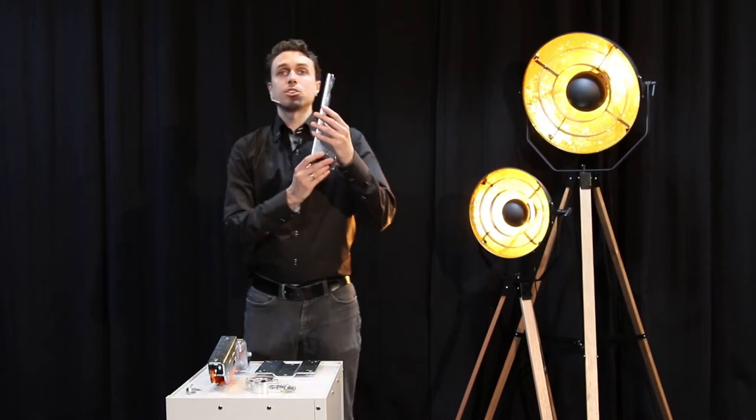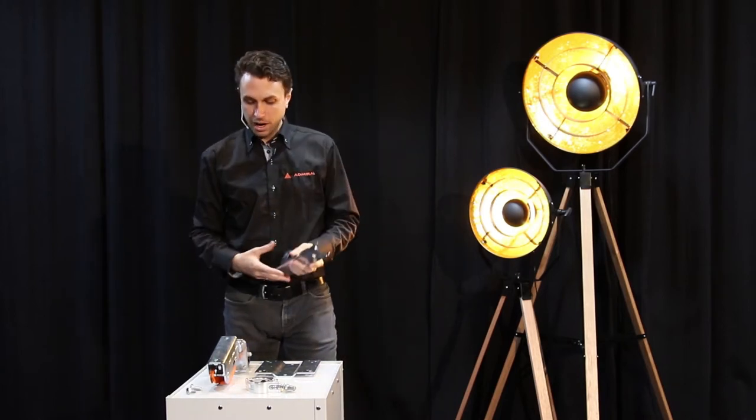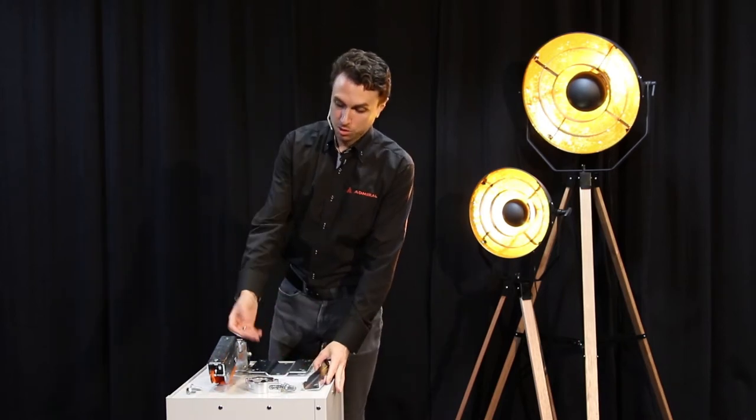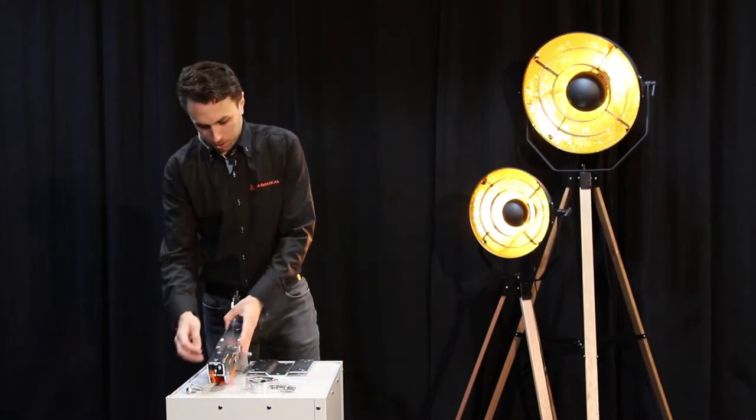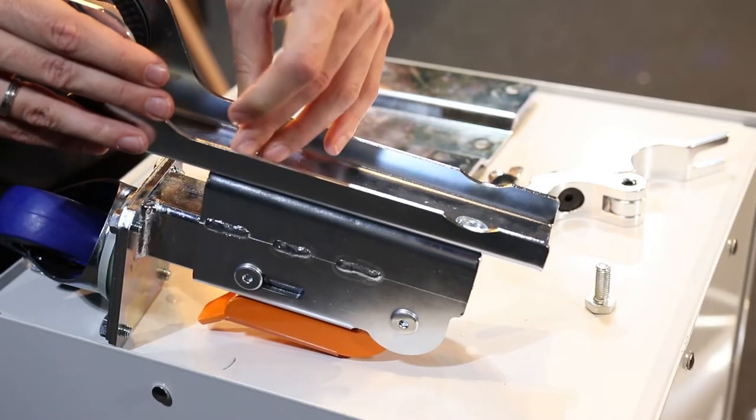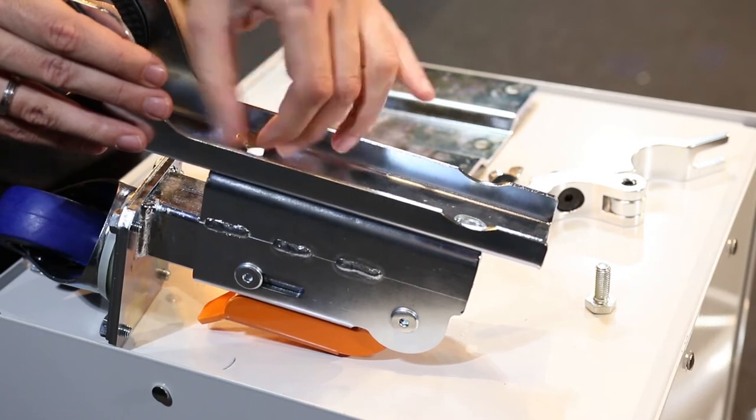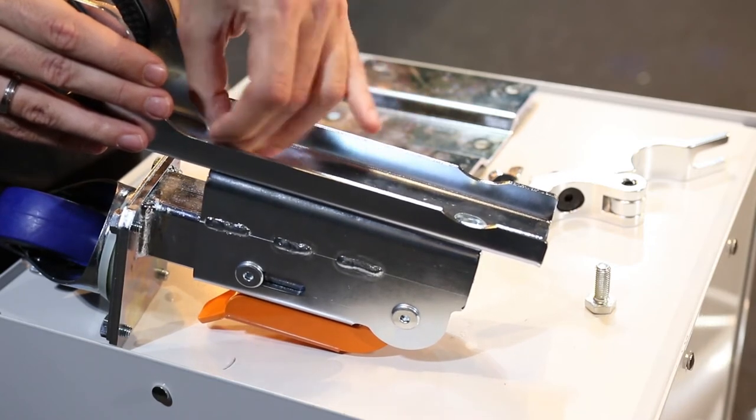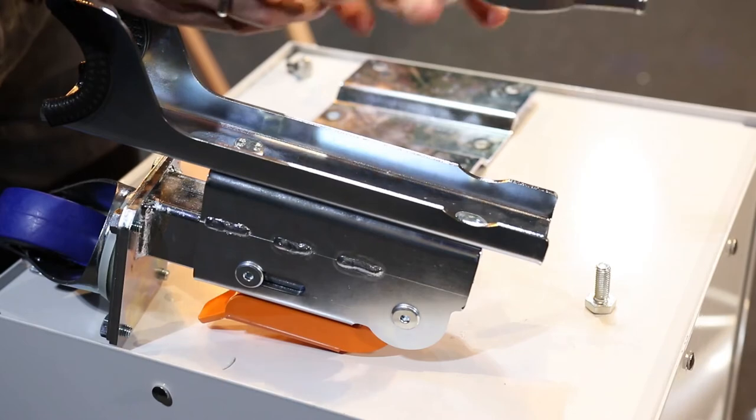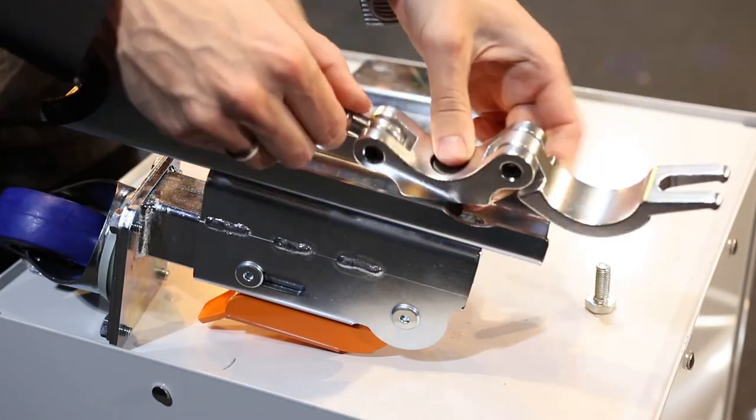Next we have the truss attachment. Now this is great for when you want to attach your lifting wheel to a truss. Simply screw in one screw on the bottom, attach a half coupler to the top and you're ready to go.